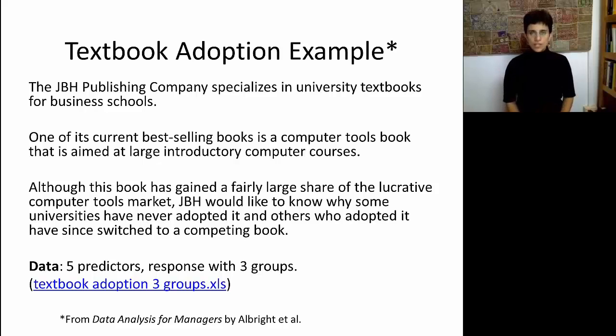The data set that's associated with this example includes information about different universities, with the outcome variable being whether the university adopted the book, whether they adopted and dropped it, or whether they never adopted it at all. So we have three types of universities. And for each one of these universities, we have different variables, such as the size of the university or the program.